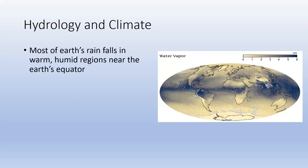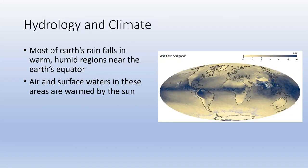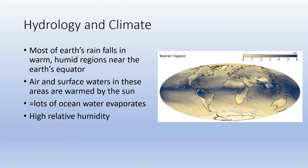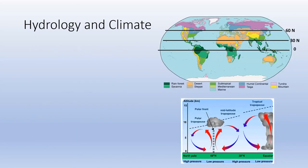On a global scale, most of Earth's rain falls near the warm, humid equator. A water vapor map shows a ton of water vapor in the air around the equatorial region. Very warm air and warm surface waters lead to a lot of evaporation. That evaporated water rises, cools, condenses, becomes supersaturated, and rains out.